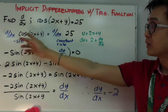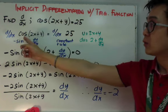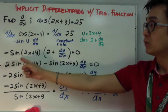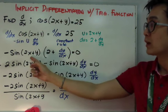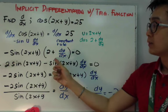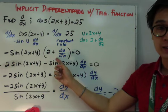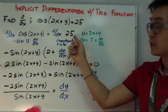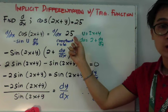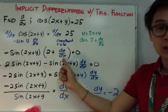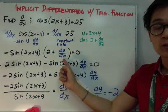So to simplify it, derivative ng cosine(2x + y) using implicit differentiation will become negative sine(2x + y) times (2 + dy/dx) equal to 0. Kasi yung derivative ng constant is 0.